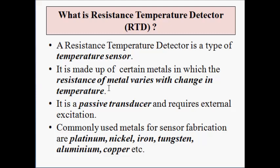RTDs or Resistance Temperature Detectors are made up of metals. Those metals possess a unique property — the resistance of those selected metals, which are used for fabrication of RTD, exhibits a change with respect to the surrounding temperature. This is the operating principle utilized for the fabrication of RTD. There is a change in the resistance of the metals with a change in the surrounding temperature.